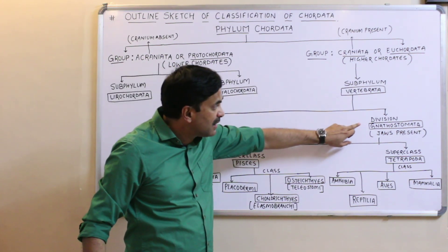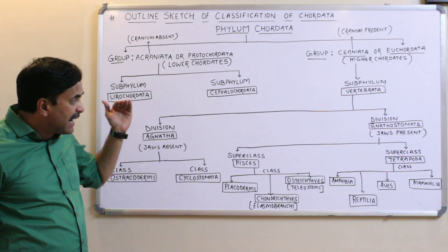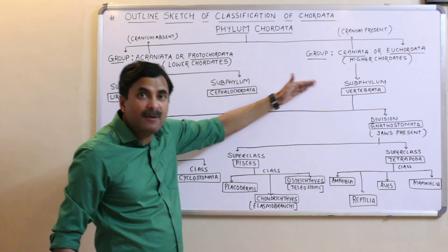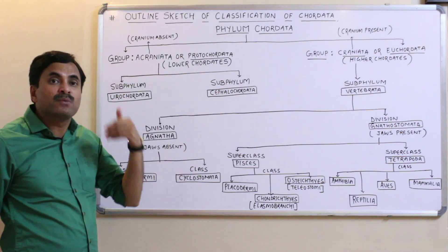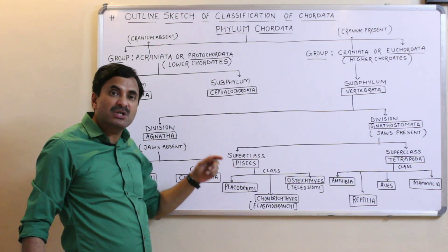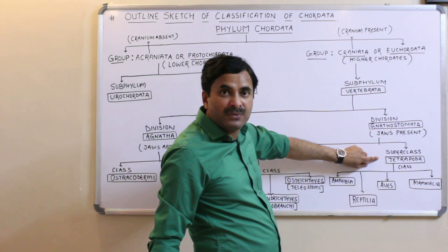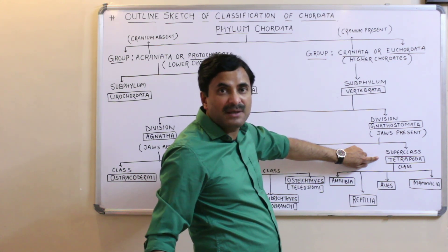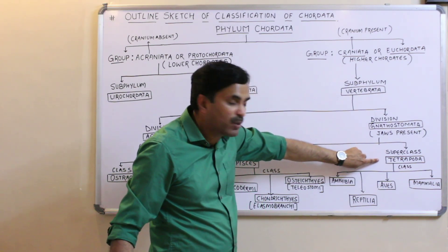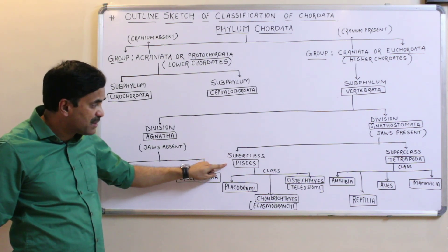The division Gnathostomata of subphylum Vertebrata is classified into two superclasses: superclass Pisces, which includes fishes, and superclass Tetrapoda — 'tetra' means four and 'poda' means legs — meaning they have four limbs or four appendages.